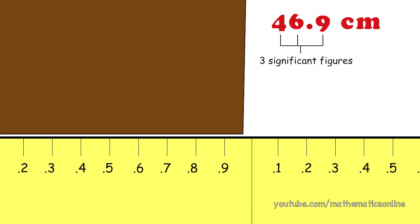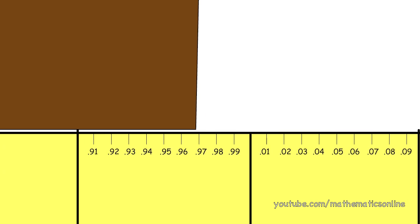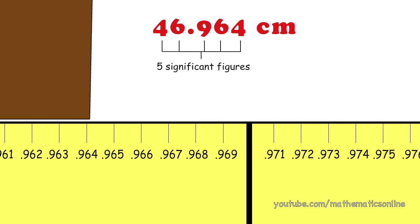If we continue increasing the precision of our measuring stick, we can see that the block of wood now measures 46.964, and we have five significant figures.